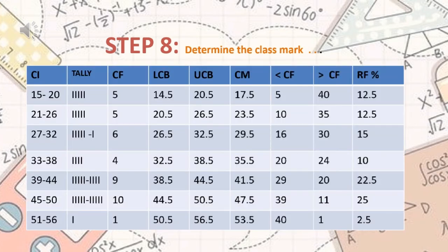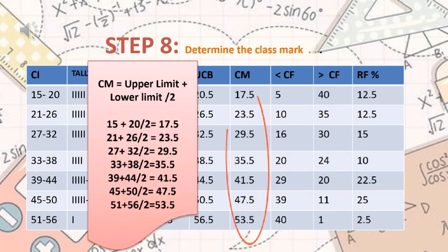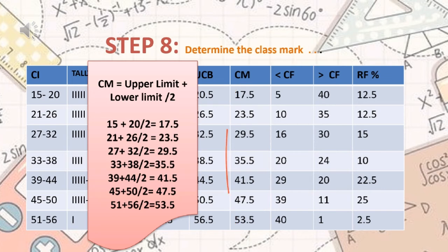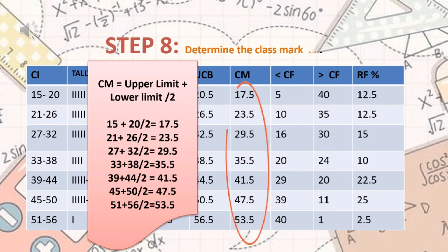We have step 8: determine the class mark. To get the class mark, we add the upper limit plus the lower limit and divide by 2. Our class marks are 17.5, 23.5, 29.5, 35.5, 41.5, 47.5, and 53.5.